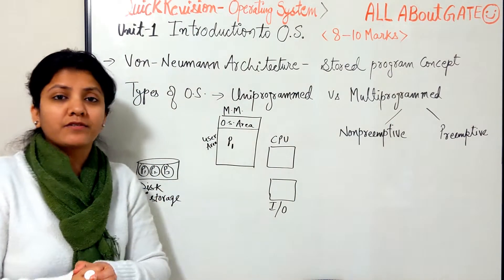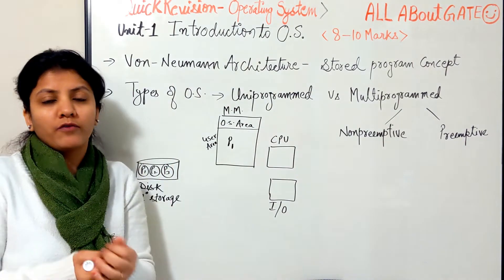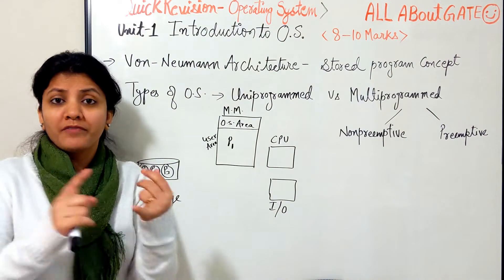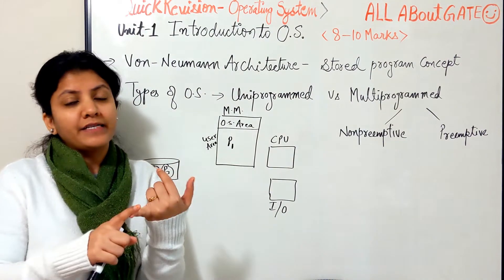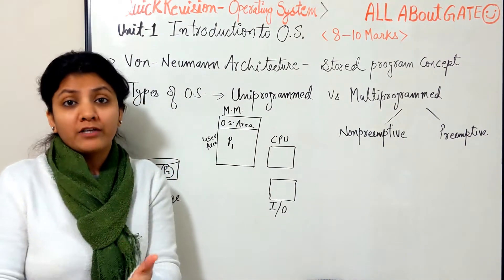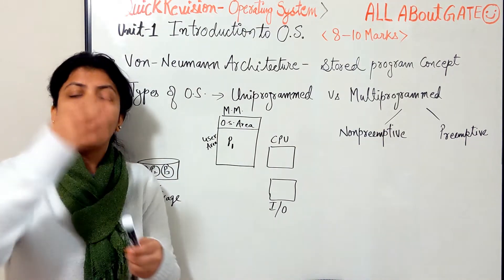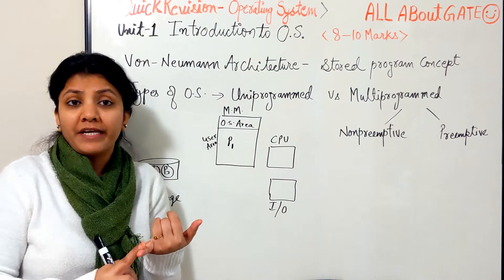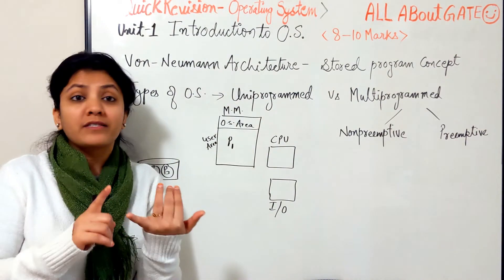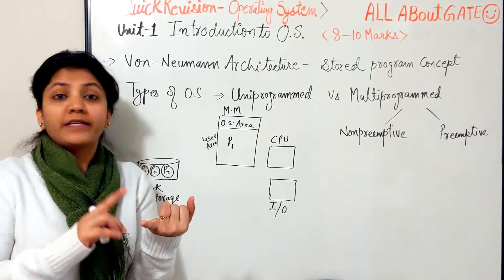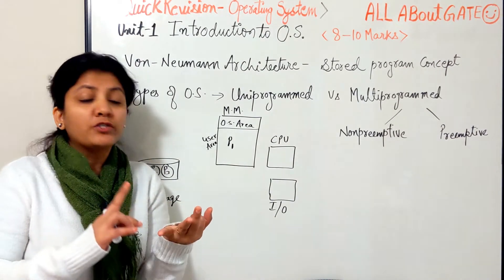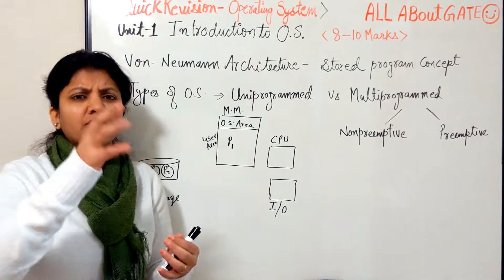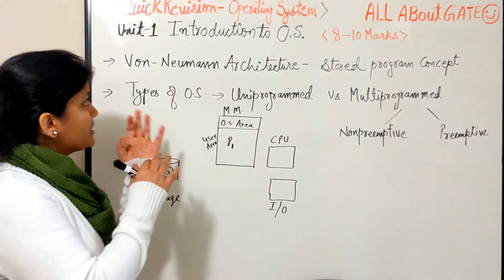Let's start with the first unit of the Operating System — the introduction and background. Nothing much to revise there. You need to know what an operating system is: it's an interface between the user and the hardware. The OS interface to interact with the user is known as the command line interpreter; it could be a text user interface or a graphical user interface.